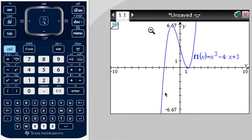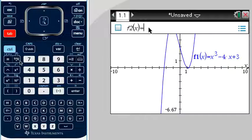So to graph another function, we press tab. And our new function is 2x plus 4. Enter.